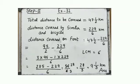Now look at question number 11. A basket contains 3 types of fruits totalling 19 1/3 kg. There are 8 1/9 kg of apples, 3 1/6 kg of oranges, and the rest are pears. What is the weight of pears in the basket?